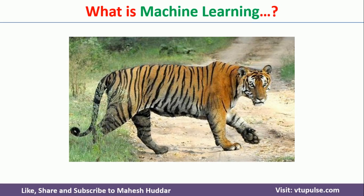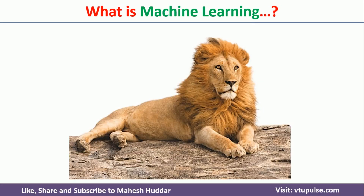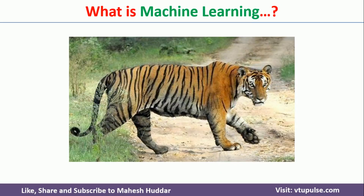The reason is very simple. Over a period of time, starting from our childhood, our parents, teachers, brothers, sisters — everybody has shown such kind of images to us and told that whenever you see such kind of images, you have to recognize this image as either tiger or this one should be recognized as lion and so on. Over a period of time, our brain has been trained in such a way that whenever you see such kind of images, it should be classified as lion or recognized as tiger.